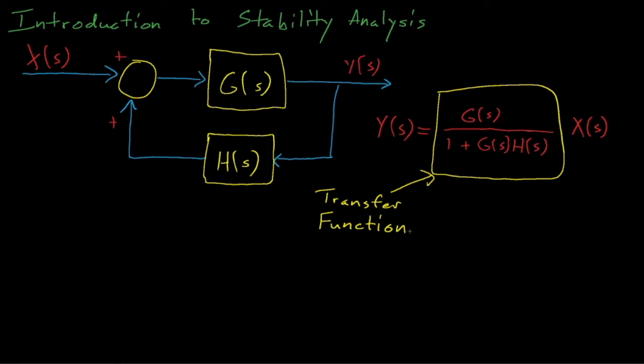We can design systems with all sorts of transfer functions. Some transfer functions might seek to magnify signals, like a stethoscope or a telescope. Other systems might seek to dampen a signal, like shock absorbers in a car, and some transfer functions might seek to cancel some outside input signal entirely, such as noise-canceling headphones. But in all cases, the way that a control system responds to input signals depends on its transfer function.